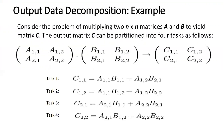A good example is matrix multiplication. Consider multiplying two n×n matrices A and B to yield matrix C. The output matrix C can be partitioned into four tasks. A and B are the input matrices and their product gives resultant matrix C. Using the matrix multiplication formula, we get elements C11, C12, C21, and C22. Selecting the output matrix C for decomposition, we get task 1 (C11), task 2 (C12), task 3 (C21), and task 4 (C22).